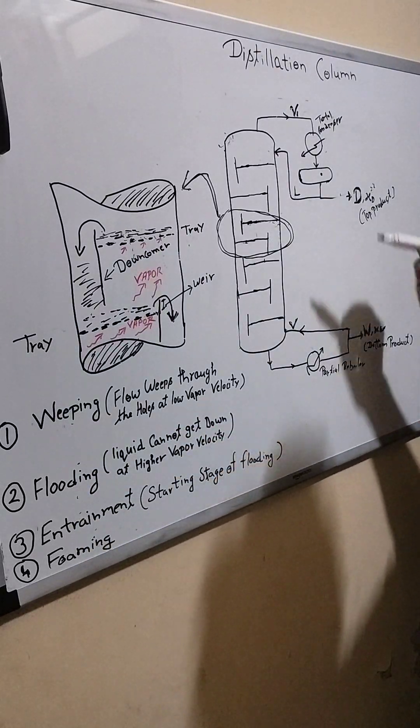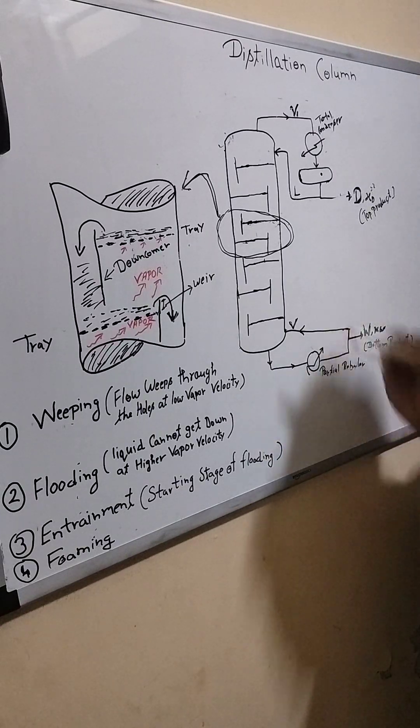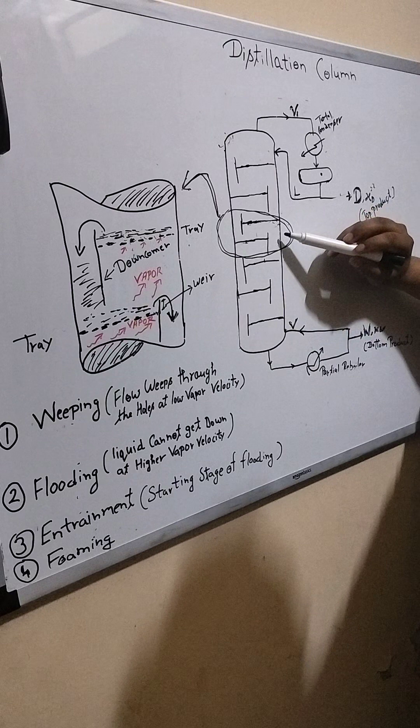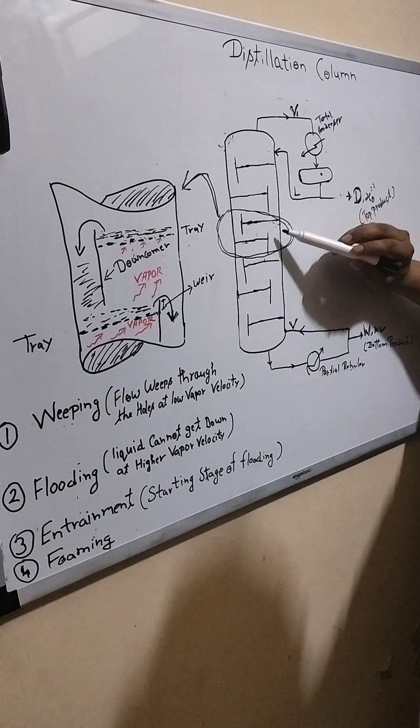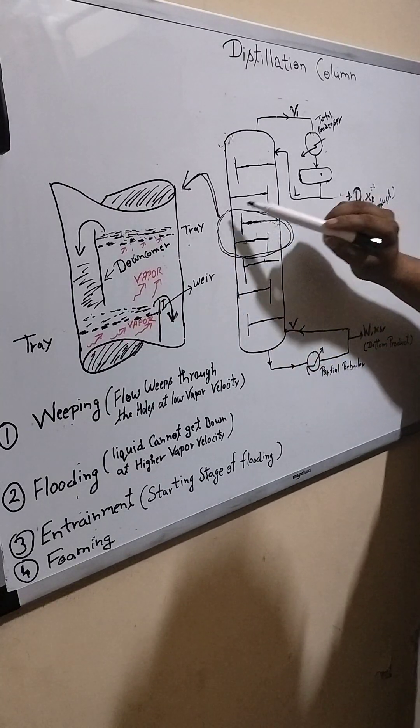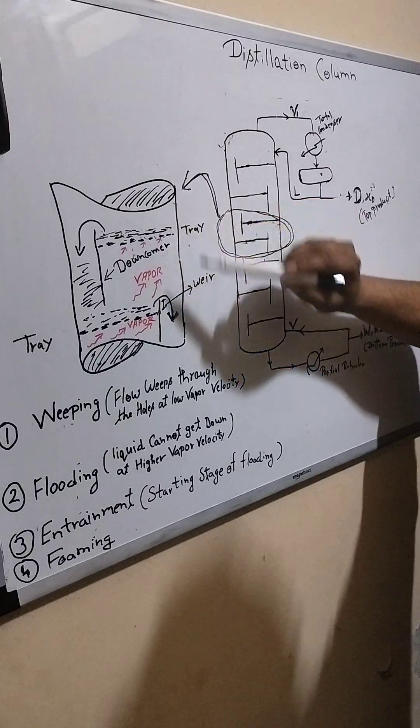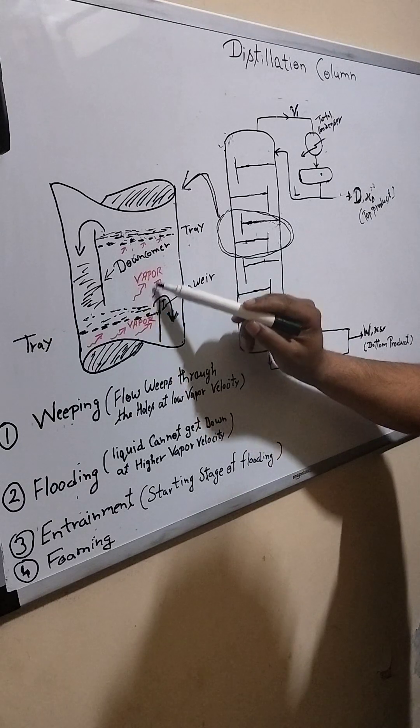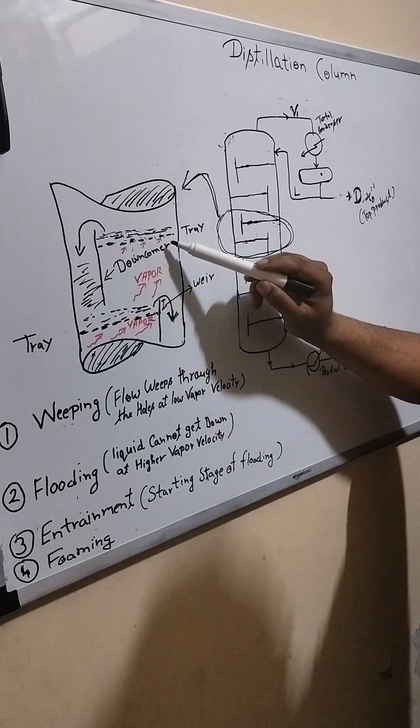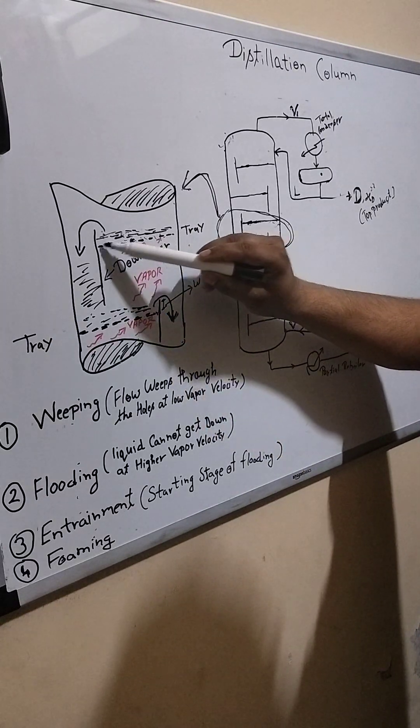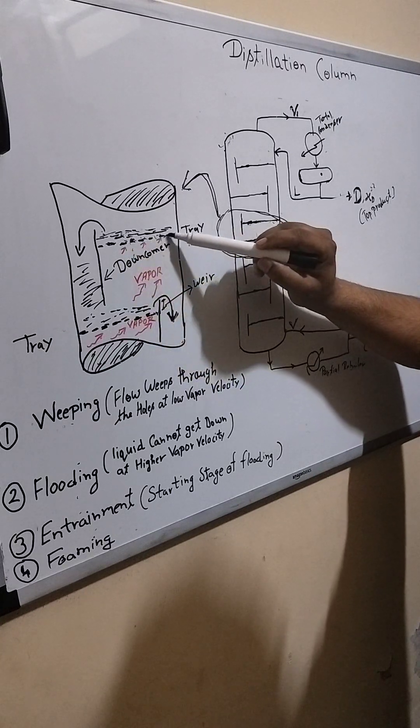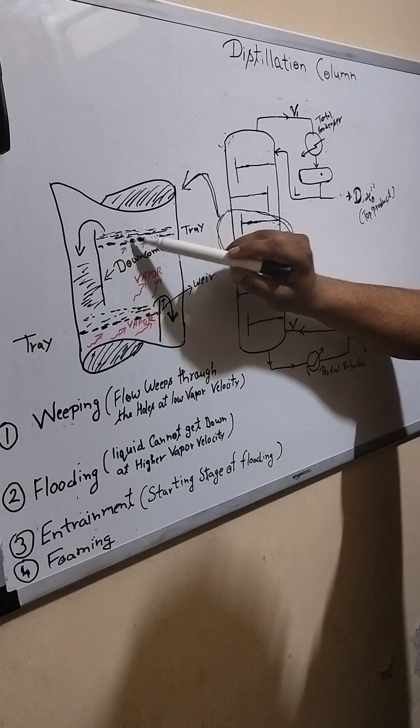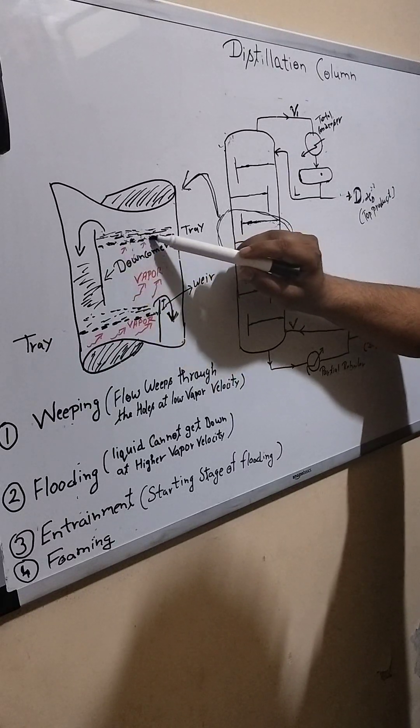So let's start from the scratch. What happens generally in the column? You can see the schematic diagram of this column here. Your vapor will just go upward, so it will contact between these trays. It's a perforated tray which has holes.